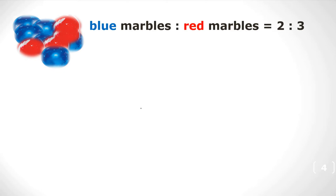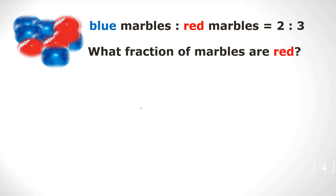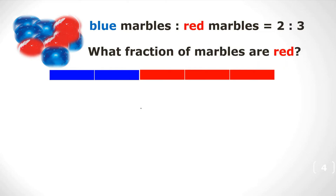Blue marbles to red marbles is 2 to 3. What fraction of marbles are red? There are 5 parts total, because 2 parts are blue and 3 parts are red. Add them together and we get 5 parts. So therefore the fraction of marbles that are red is 3 over 5.